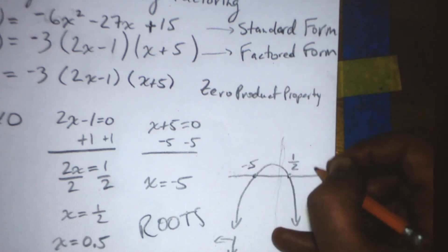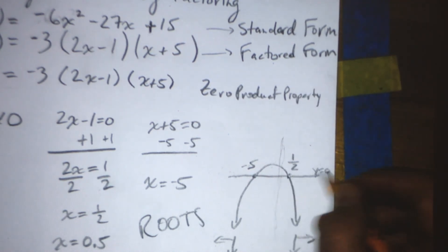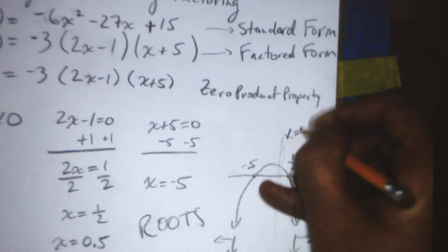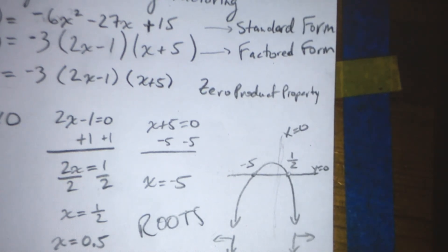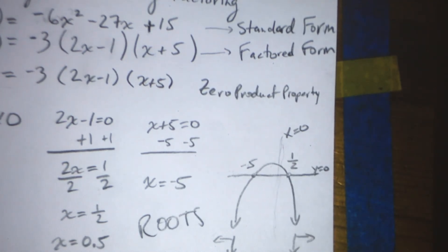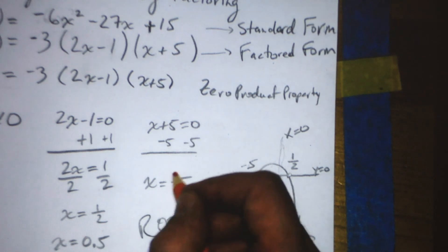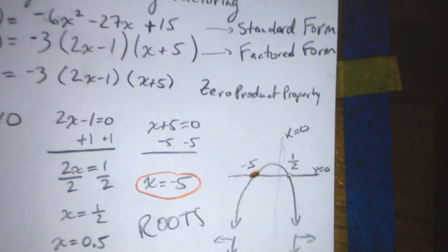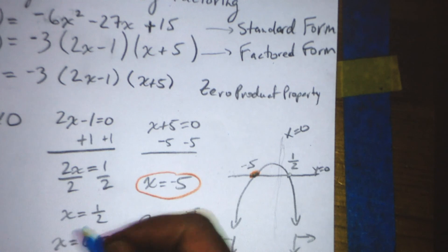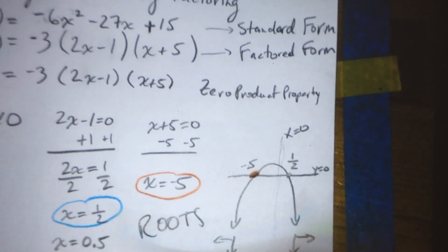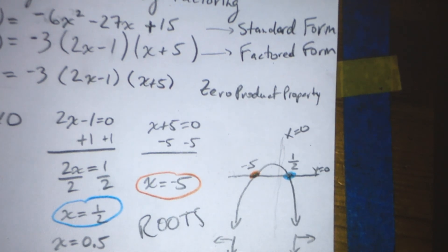Remind yourself that this line is y equals 0. This line is x equals 0. And let's highlight those roots in color. So, x equals negative 5, that's this root. x equals positive 1 half, that is this root. And you have solved for the roots of a quadratic. Good job!